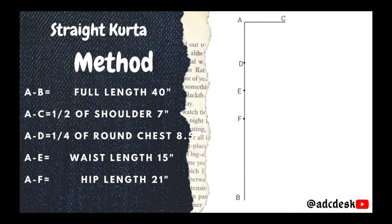So here, A to C is half of shoulder, that is 7 inches. A to D, one-fourth of round chest, that is 8.5 inches. A to E, waist length, which was already mentioned in the measurement, that is 15 inches. And A to F is hip length, 21 inches.